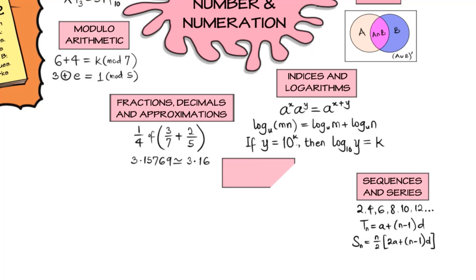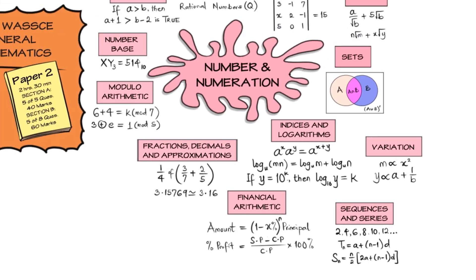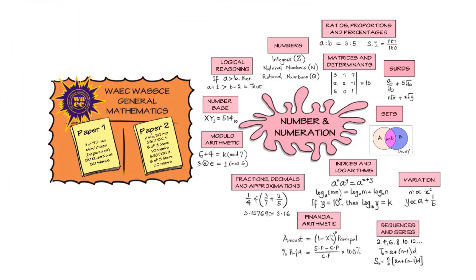This is also leading us to financial arithmetic. We can talk about annuities, depreciation, and all of these we are expected to know. And finally on number and numeration, we can talk about variation, in which we have direct variation, partial variations, inverse variation, joint variations. How numbers relate to one another. How do they increase in one? We affect the other. Maybe it will reduce, maybe it will also increase, or it will just remain a constant. That is number and numeration that WAEC expects that the students attempting this general mathematics paper should know about.